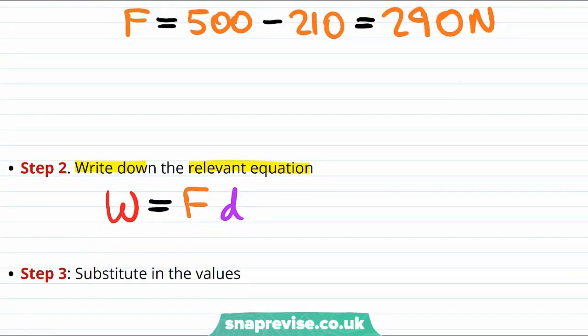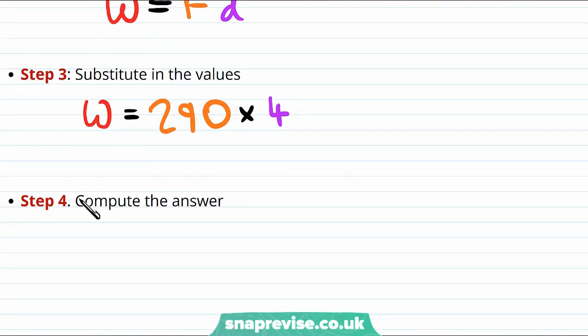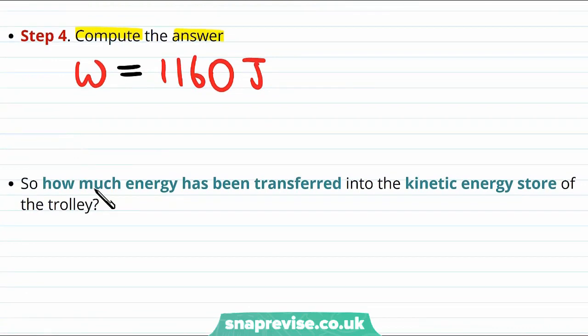Now we are ready to substitute in our values which give the work done is equal to the resultant force which was 290 Newtons multiplied by 4 meters which was the displacement. Finally we're going to want to put this calculation into a calculator to compute the answer, which gives that the work done is equal to 1160 Joules. Therefore the amount of energy that has been transferred into the kinetic energy store of the trolley is 1160 Joules.